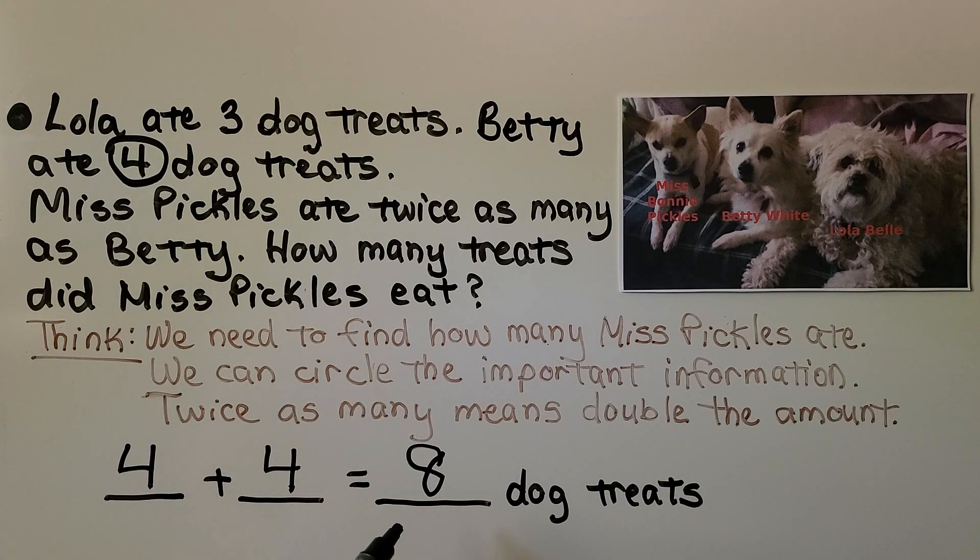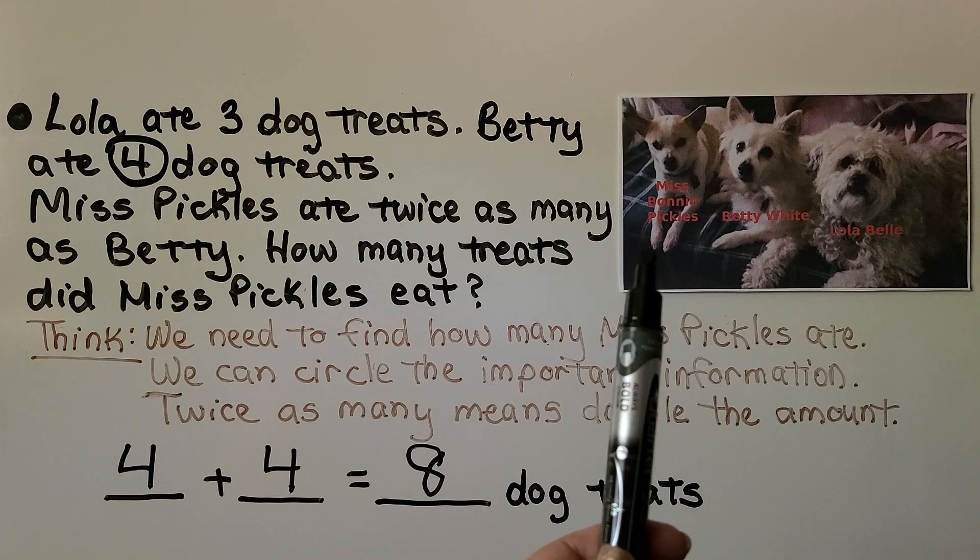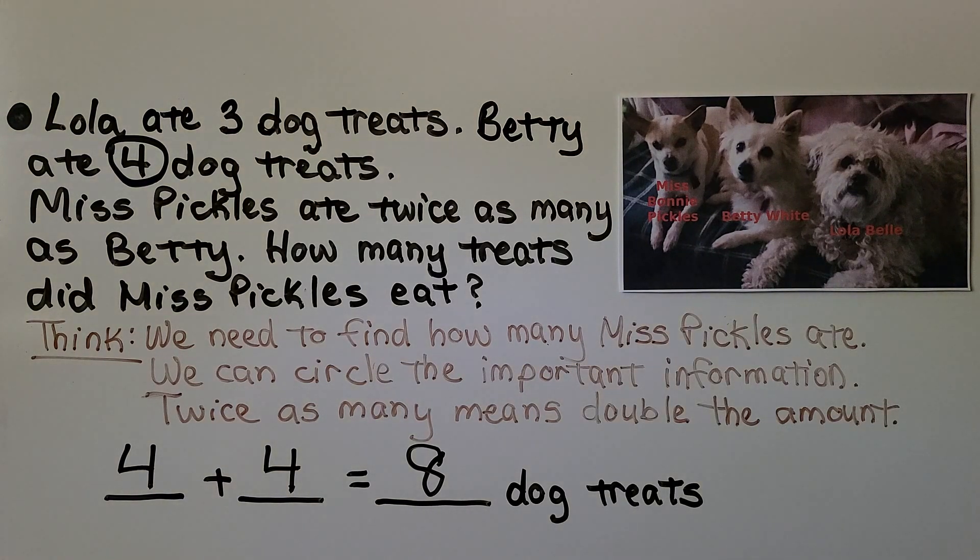Miss Bonnie Pickles ate double what Betty ate. Betty ate 4. We double it so it's 4 plus 4. That means Miss Bonnie Pickles ate 8 dog treats. She's an awfully small dog to eat that many treats.